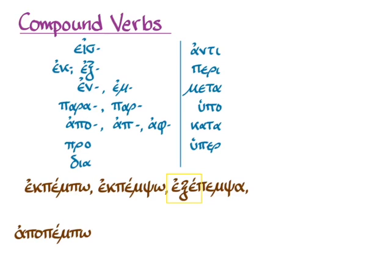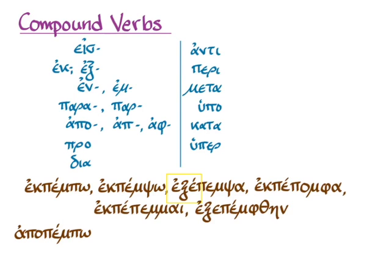So you have to pay attention to both things. When we move on to the fourth principal part, it goes back to 'epi' at the beginning of the stem, and so we go back to 'ek,' and 'ekpepemai' in the fifth principal part. But you see again in the sixth principal part how the augment goes between the prefix and the stem of the verb, and you get 'eksepemthane.'